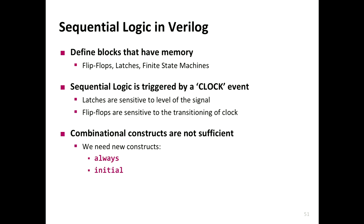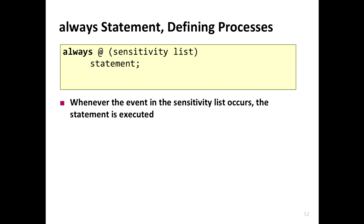I tried to use the Wacom tablet so it gets recorded on video, but I failed miserably, so I'm going to switch back to blackboards. So, what's an always statement? The always statement looks like this: you have the keyword always, then an at symbol followed by what we call the sensitivity list. You read this as: execute whatever is in the statement, always, when any signal in the sensitivity list changes — whenever the event mentioned here gets triggered.